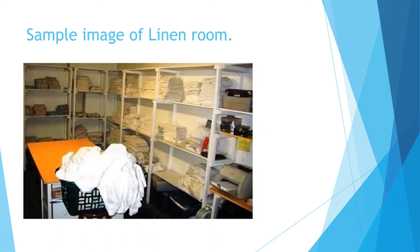This is what a linen room looks like. There is a table and a trolley filled with soiled linen ready to go to the laundry, and shelves that are neatly labeled. Bath linen, bed linen, and restaurant linen are placed separately, and documents maintained by the supervisor are on the supervisor's desk. A printer is also present for all kinds of documentation submitted to the executive housekeeper.